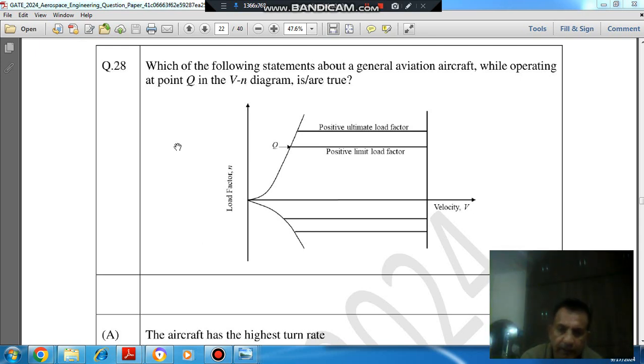Hello, welcome again. We are solving GATE 2024. I have aerospace question number 23. Which of the following statements about a general aviation aircraft while operating at point Q in the V-N diagram is true?